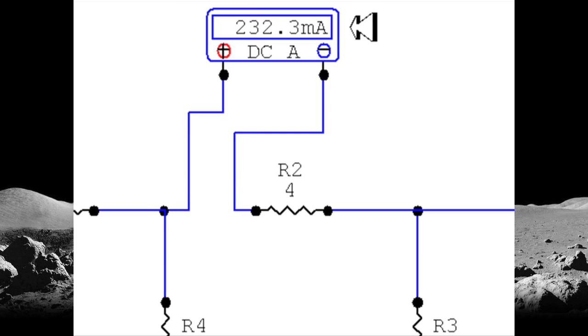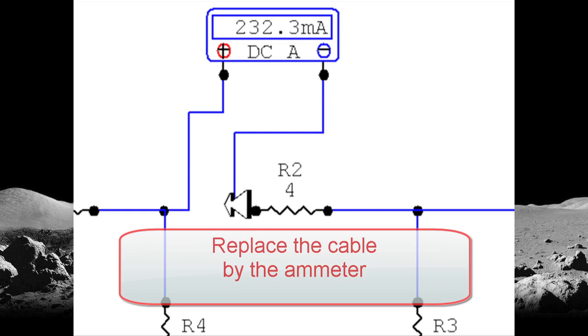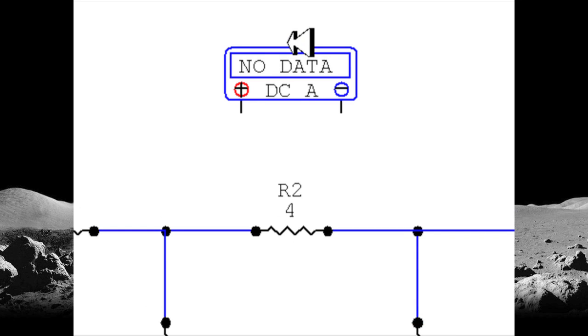When I run the simulation, I read what is the current through that device, R24. That is 232 milliamps. That is the right way of doing that. We want to measure in the cable, we remove the cable and we replace it with the multimeter, with the ammeter.